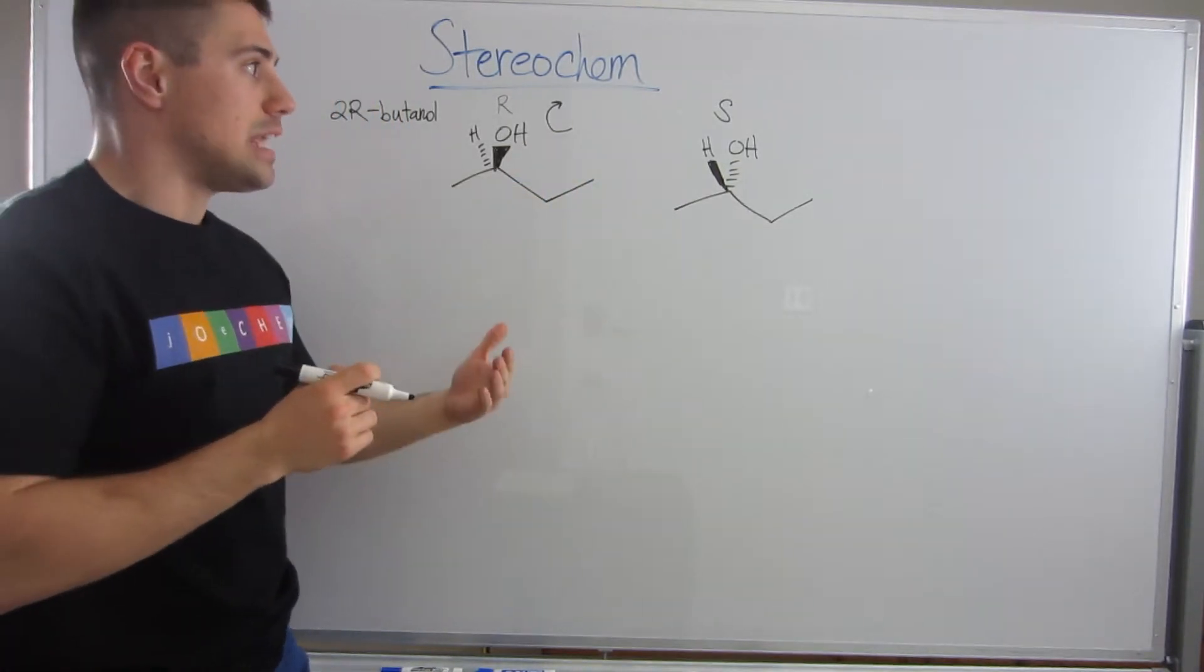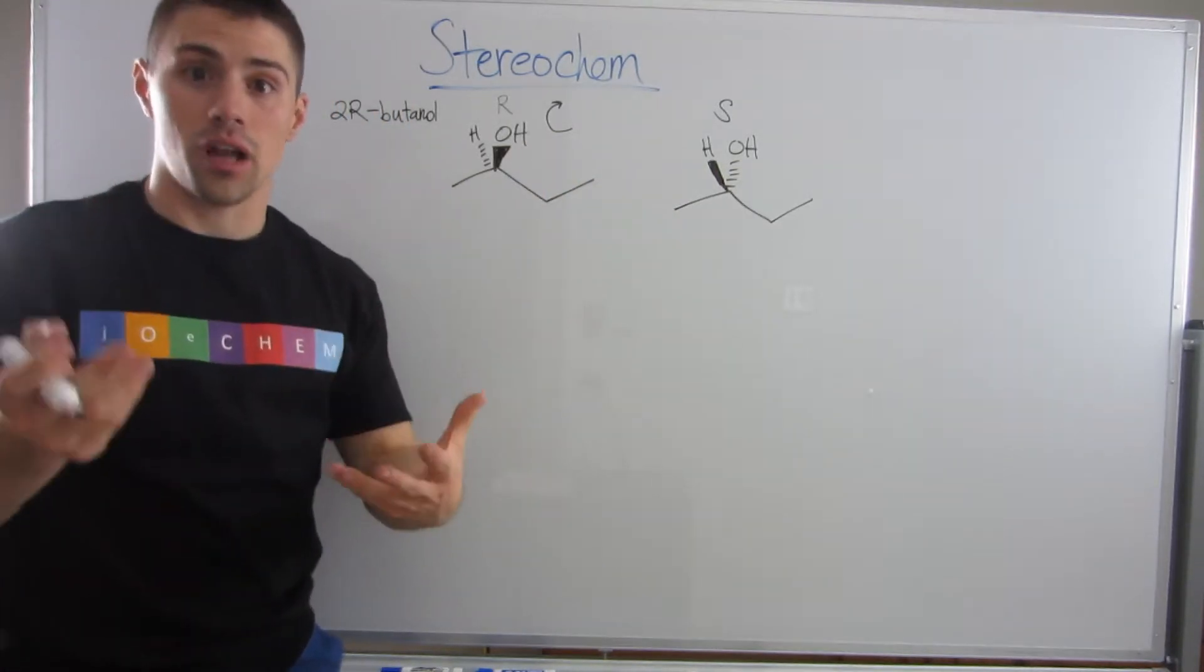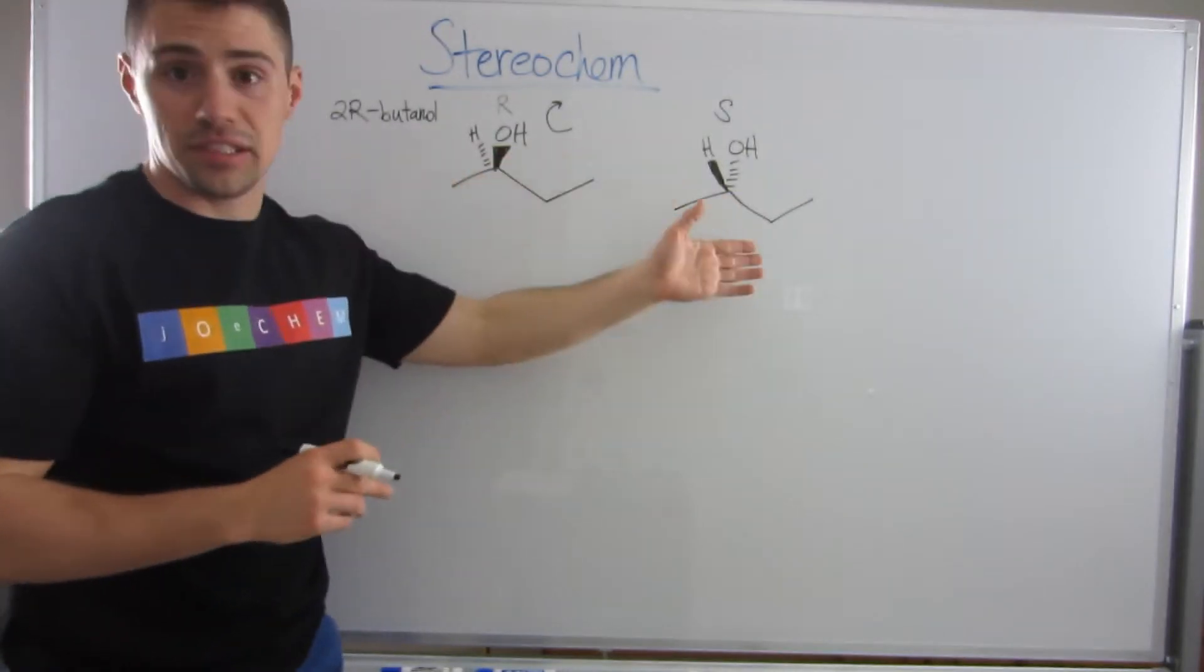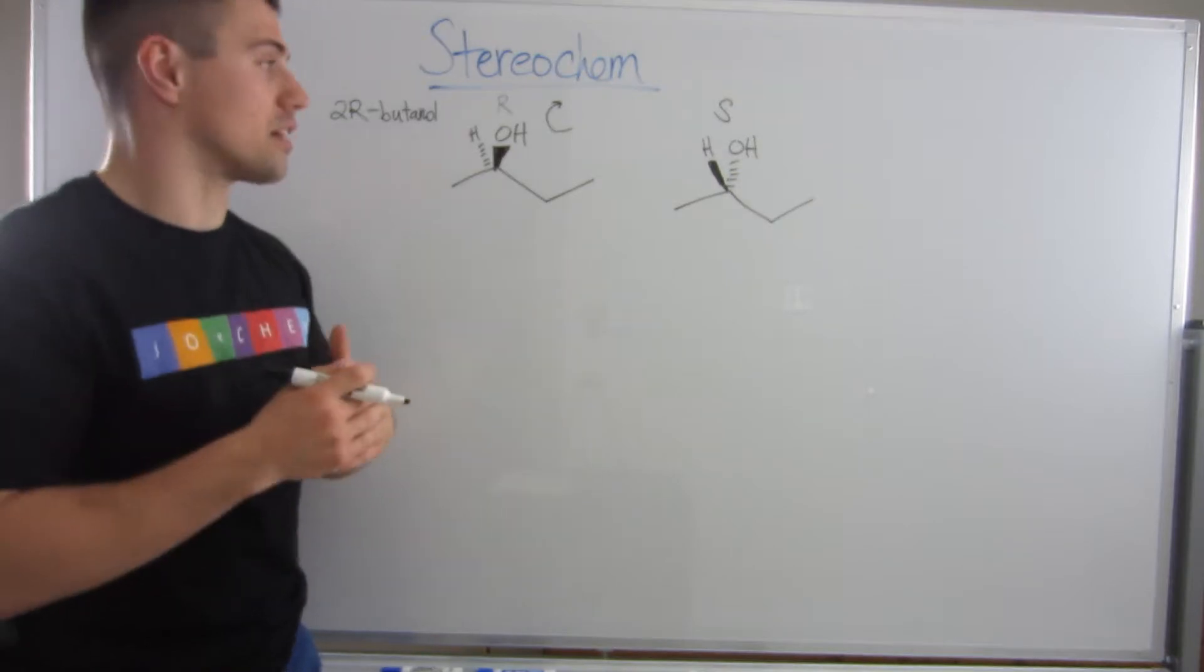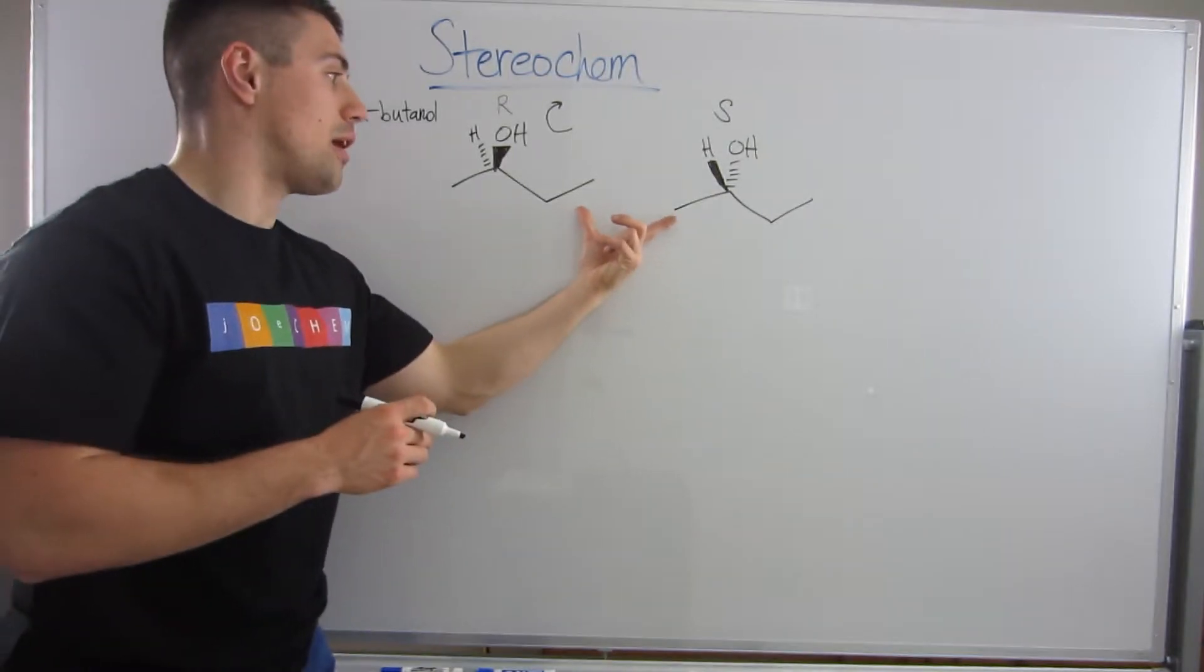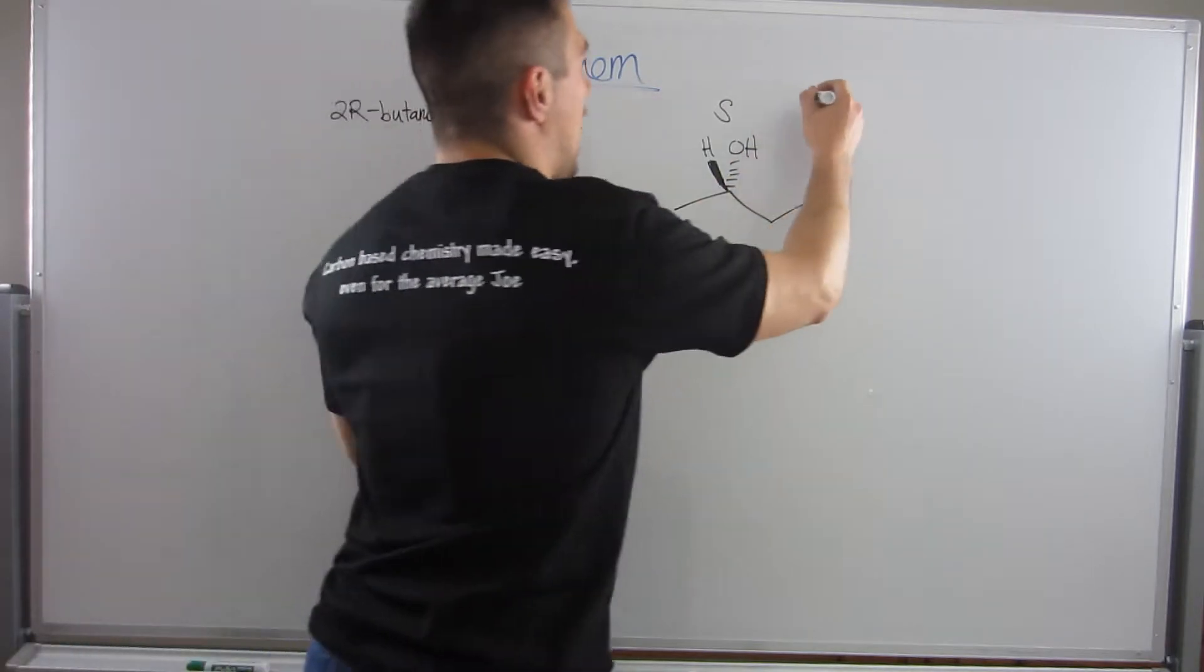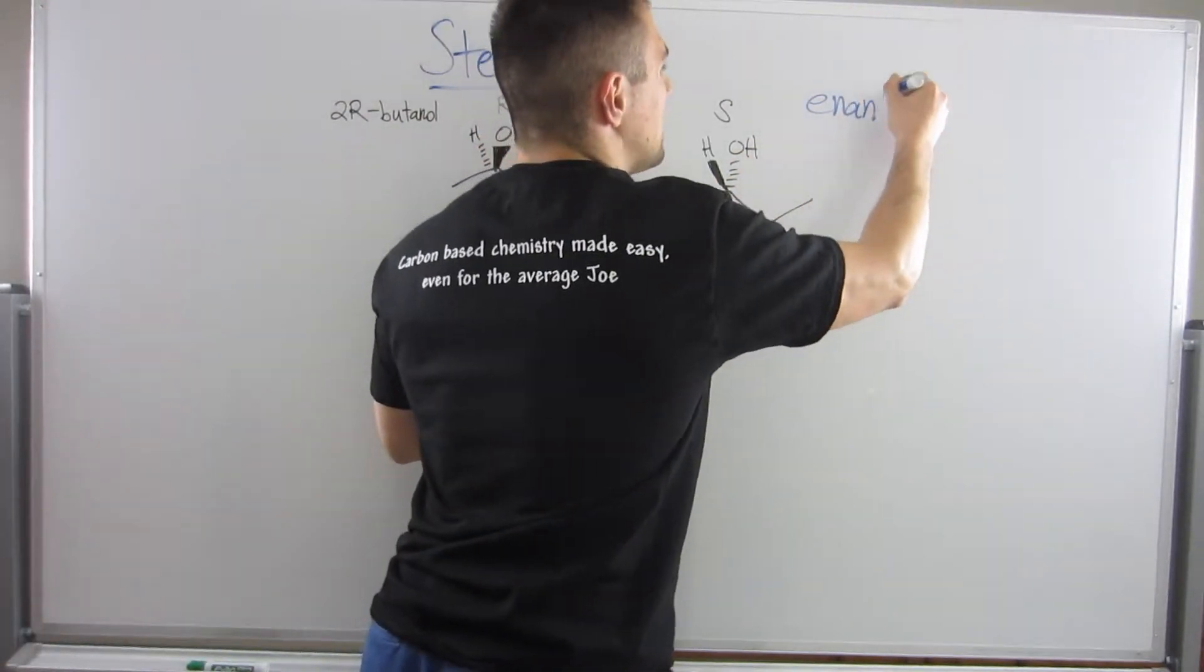Okay, so if we are also going to use some more terminology, there's only one stereocenter, but they are opposites at every stereocenter, every one stereocenter. So if we were going to talk about how these two are related, they would be classified as enantiomers.